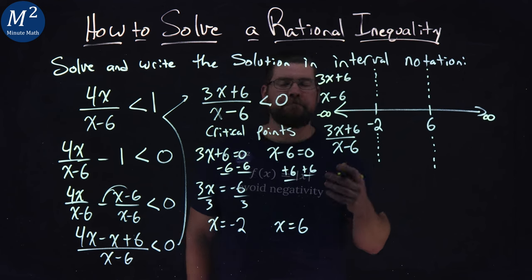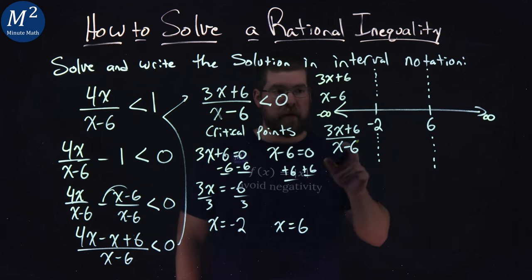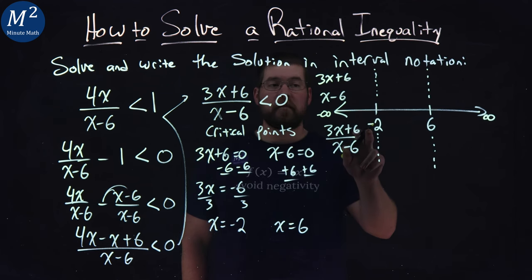So we want to pick a number within that range and see what happens. Let's pick negative 10. Negative 10 is between negative infinity and negative 2.